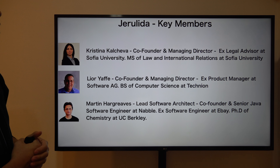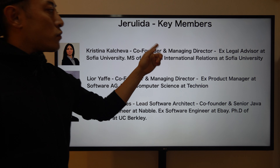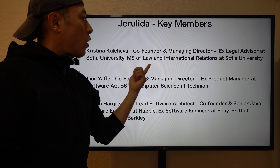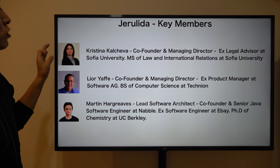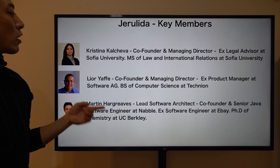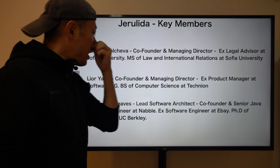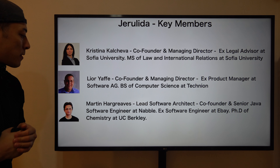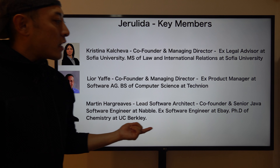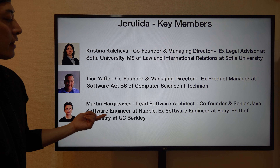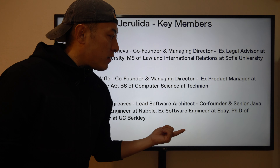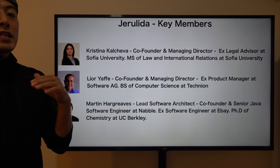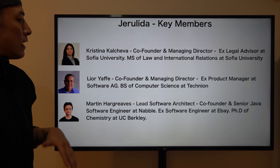Number three: team analysis. The three key members of Jelurida — the mother entity of Ardor — are: Christina, co-founder and managing director, an ex-legal advisor with an MS in Law and International Relations; Ryan, co-founder and managing director, ex-product manager at Software AG with a BS in Computer Science; and Martin, lead software architect, ex-software engineer at eBay and Navro, with a PhD in Chemistry from UC Berkeley. Compared with Cosmos and Polkadot teams, this team is not that competitive.